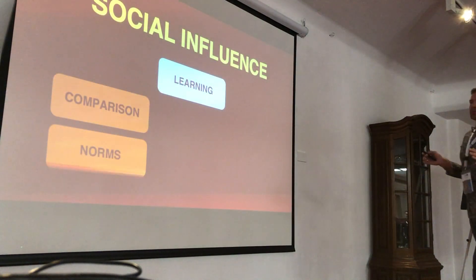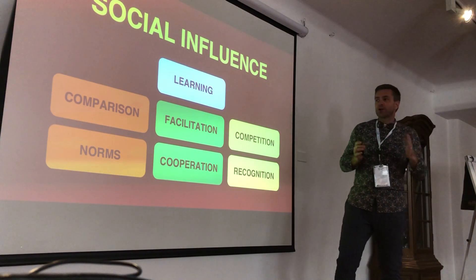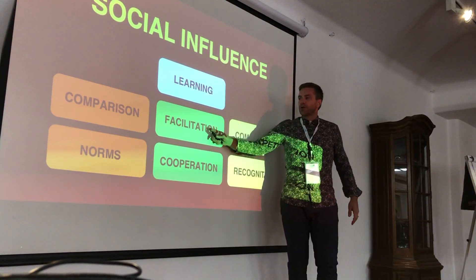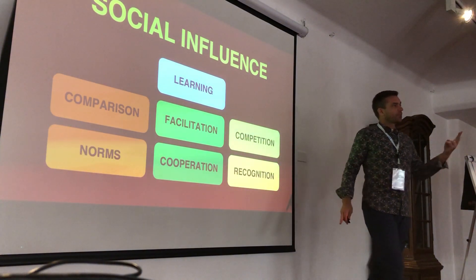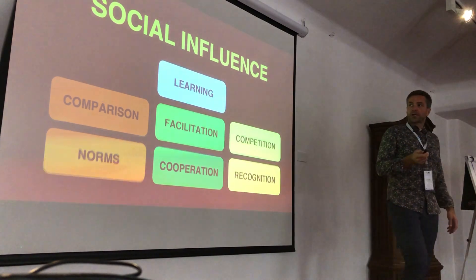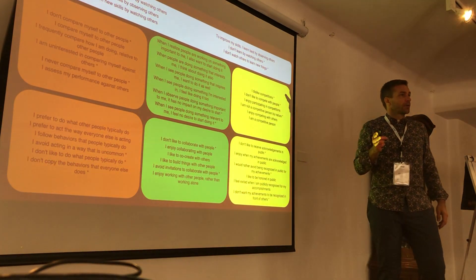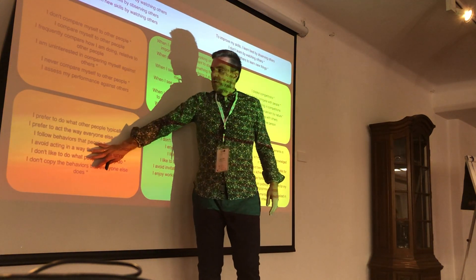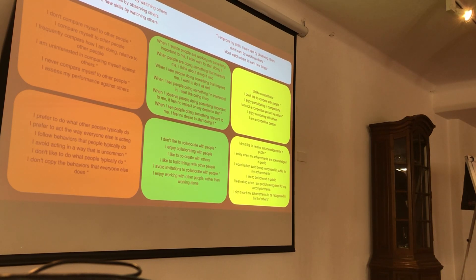The seven principles also have insights into how effective they are depending on your starting point. If you want to change attitude first, comparison and norms are recommended. If you want people to get into change through behavior, facilitation and cooperation are the approach. Competition and recognition combine both attitude and behavior at the same time. Essentially, in this research we developed an instrument to measure social influence principles in depth — with six items, six questions per construct — to measure people's susceptibility to these principles.